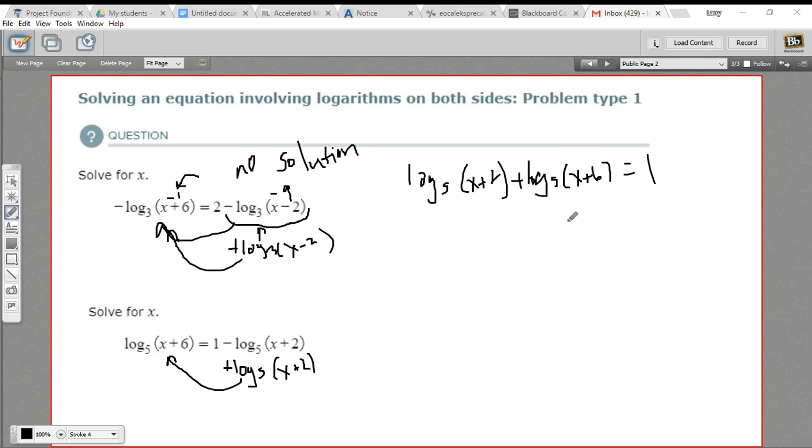So that's just after adding log₅(x+2) to both sides. Now, a sum of logs can be written as the log of their product. So let's go ahead and write it like that. This is going to be log₅[(x+2)(x+6)]. Same thing. That all equals 1.